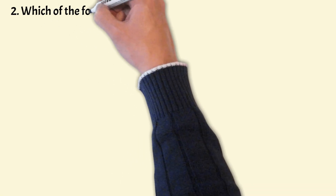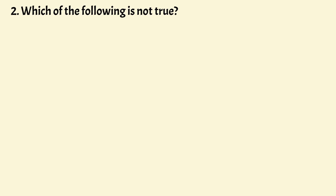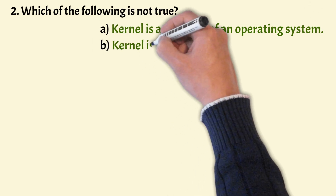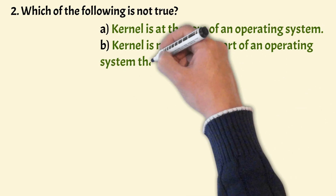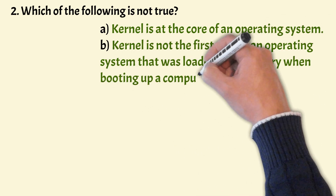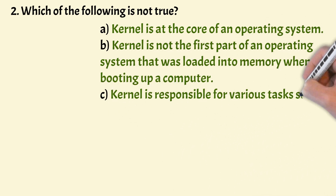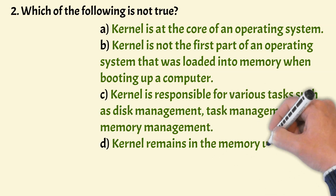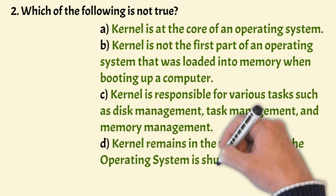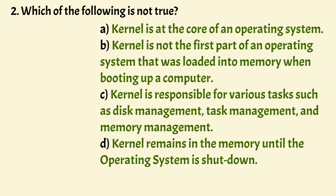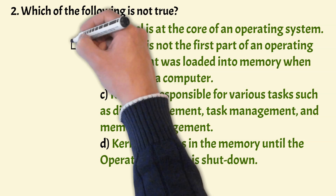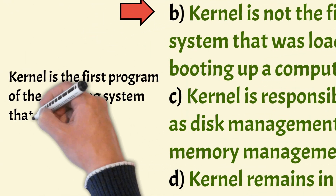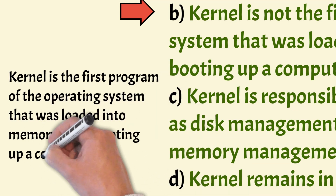The next question: which of the following is not true? Options: Kernel is at the core of the OS. Kernel is not the first part of the OS loaded into memory when booting. Kernel is responsible for disk management, task management, and memory management. Kernel remains in memory until the OS is shut down. The correct option is Option B — the kernel IS the first program of the OS that is loaded into memory when booting up a computer.